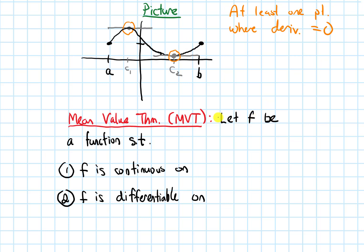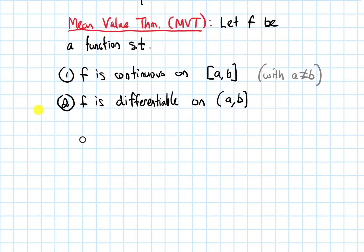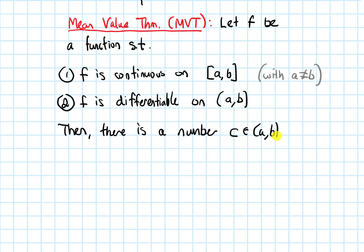I begin again by saying: let f be a function such that f needs to be continuous on the closed interval from a to b and differentiable on the open interval from a to b — so smooth, no sharp corners. And a and b are not the same number. Then there is a number c in the open interval from a to b such that the derivative of f at c equals f of b minus f of a all over b minus a.